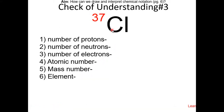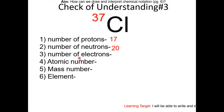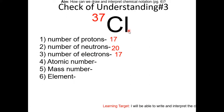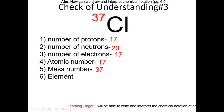For Cl: the number of protons is 17. The number of neutrons is 20 — that's 37 minus 17. The number of electrons is 17 because it's a neutral atom. Atomic number is 17, mass number is 37, and this is the element chlorine.